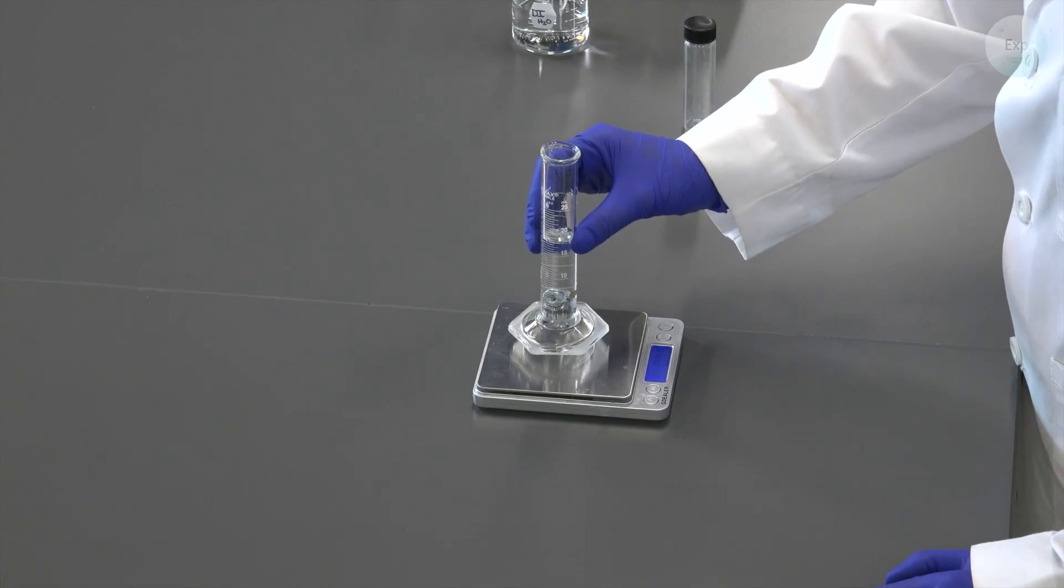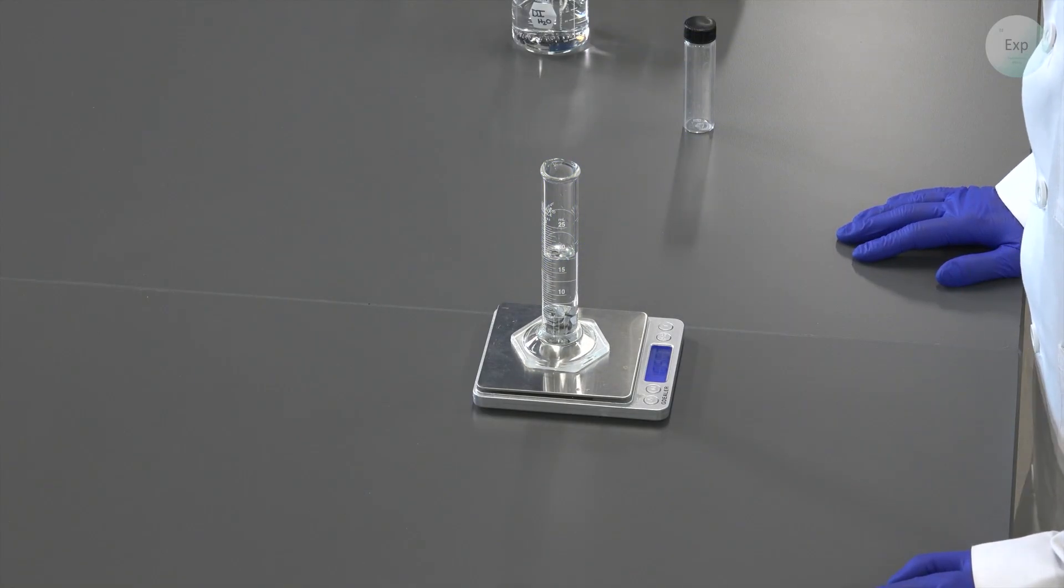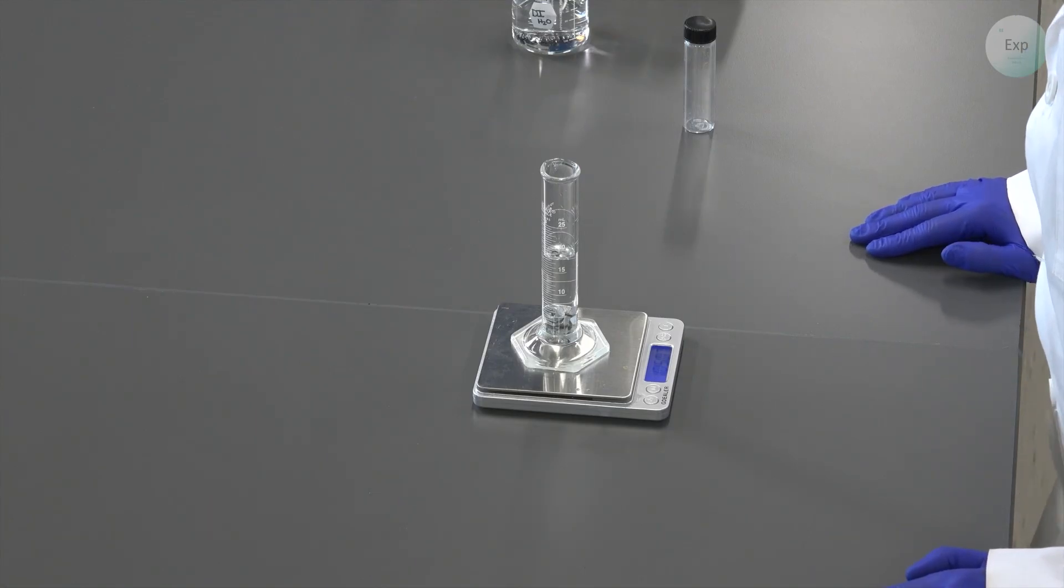Now we need to do the same with the mass. We take our object submerged in water and our graduated cylinder and place it on the scale and we record our new mass. In this case it is 105.07 grams.